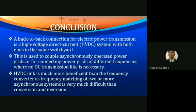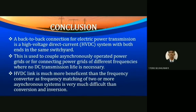In conclusion, the back-to-back connection for electric power transmission is a high voltage direct current system with both ends in the same switchyard. This is used to couple asynchronously operated power grids or for connecting power grids of different frequencies where no DC transmission line is necessary.